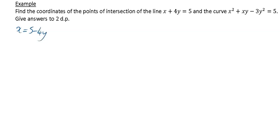What we're then going to do is substitute that into the quadratic equation. So my quadratic equation was this thing and we're going to, everywhere we see x, we're going to replace that with 5 minus 4y. So it was x squared, so it's (5 minus 4y) squared plus x which is now (5 minus 4y) times y, and then minus 3y squared is equal to 5.